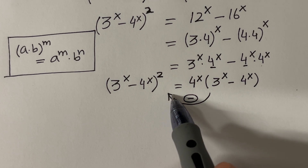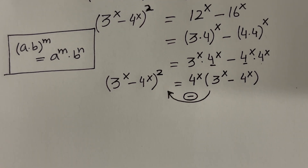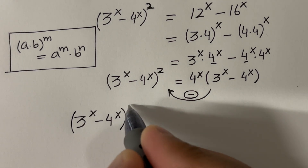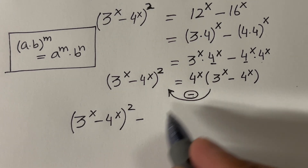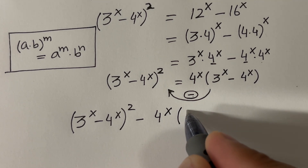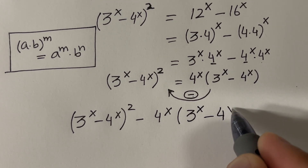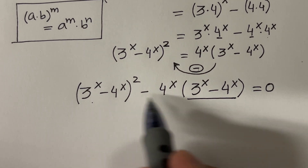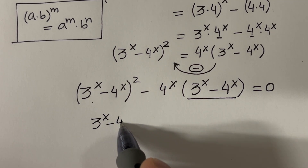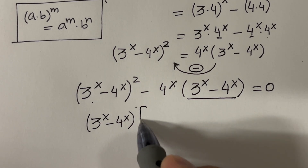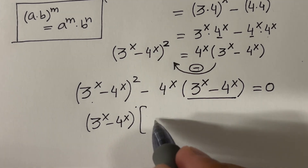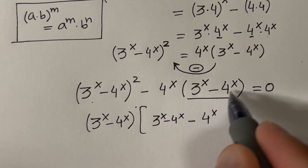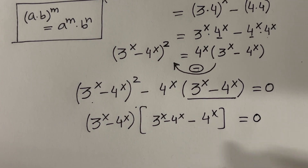Since this term is positive, moving it to the left makes it negative. So let me rewrite: the left hand side becomes (3^x minus 4^x) whole squared, minus 4^x times (3^x minus 4^x), equal to 0. Now, we have (3^x minus 4^x) common in both terms, so let's factor that out. After factoring, we get (3^x minus 4^x) times [(3^x minus 4^x) minus 4^x] equal to 0.